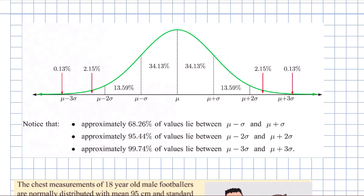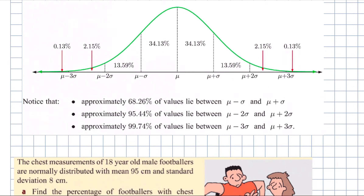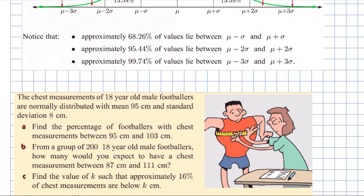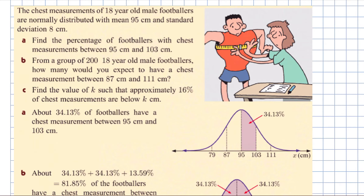We can use that as a guide: if we get a value that's five standard deviations above the mean, we'd say this is either extremely rare or something unusual is going on. We can use that statistically to help us.